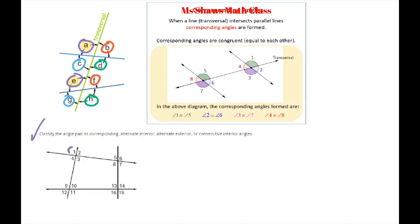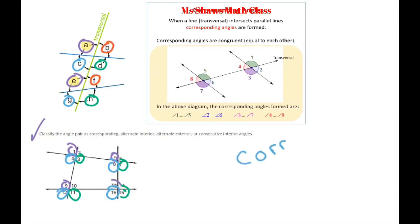In our case, our lines aren't parallel, so our corresponding angle pairs are: 1 and 9, 5 and 13, 3 and 11, 7 and 15, 4 and 12, and 8 and 16. That's what a corresponding angle is. I remember it by 'corresponding' and 'corner' — they both start with 'cor.'